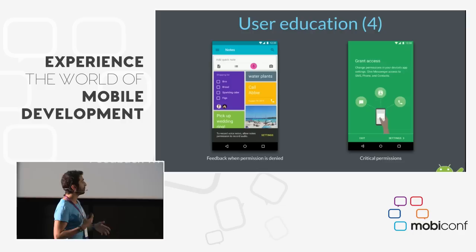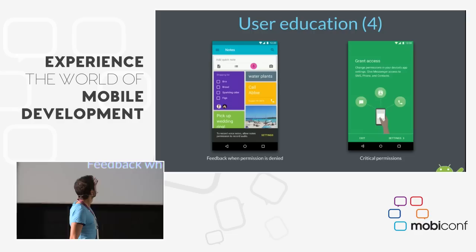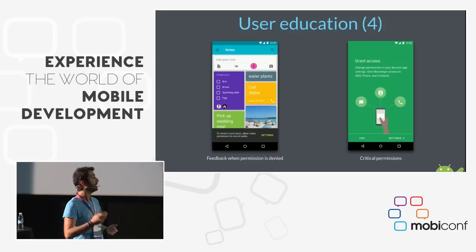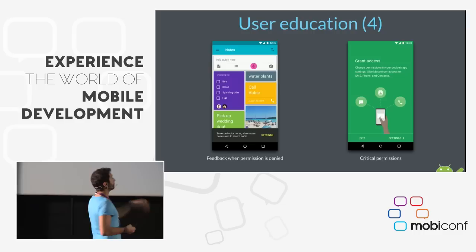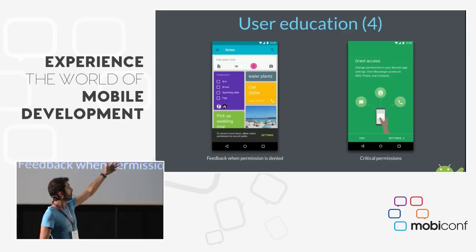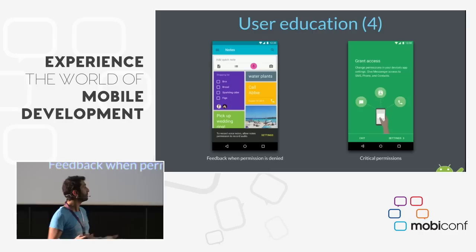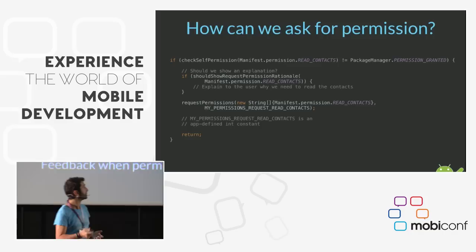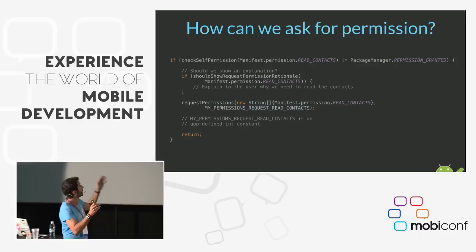'Feedback when permission is denied' — if the user denied the permission and also checked 'never ask again,' we should provide a way for them to change their mind. A nice way, like in Google Keep, is showing a snackbar with a 'Settings' option. Clicking it takes the user to the app settings where they can modify their previous decision. For critical permissions like in Google Hangouts, after denying the required permissions, educate the user explaining what the permissions are needed for, then offer to go to settings or exit.